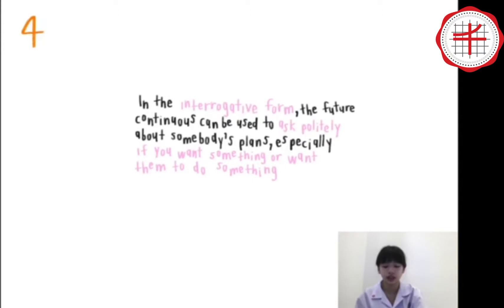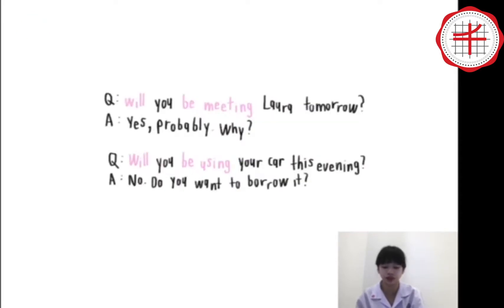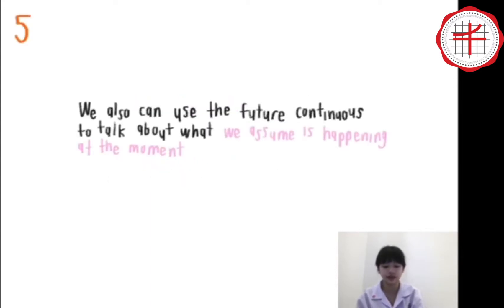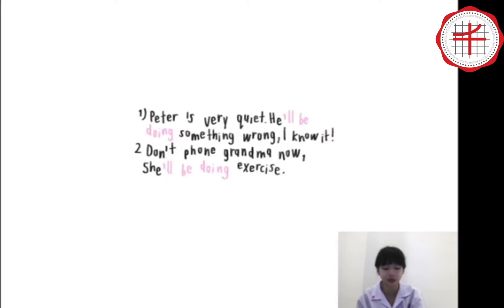Fourth, in the interrogative form, the Future Continuous can be used to ask politely about somebody's plan, especially if you want something or want them to do something. For example, will you be meeting Laura tomorrow? Will you be using your car this evening? Fifth, we also can use the Future Continuous to talk about what we assume is happening at the moment. For example, Peter is very quiet — he will be doing something wrong, I know it. He will be doing exercise.